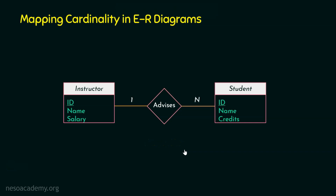The third type of mapping cardinality is many to one. Here n is on the instructor side and one is on the student side. It means one instructor may advise one student only, but a student may have many advisors. With arrow-based notation, there is no arrow on the many side and an arrow on the one side. Another example: many faculty members can work for a single department.